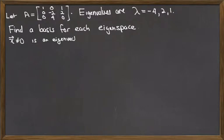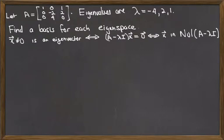Recall that x not equal to 0, a vector, is an eigenvector for lambda if and only if it's a solution to this equation A minus lambda I times x is equal to 0. And that occurs if and only if x is in the null space of the matrix A minus lambda I.